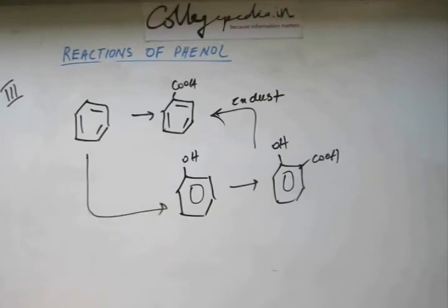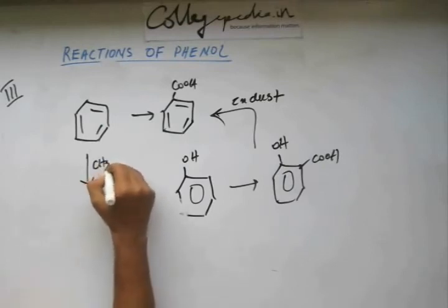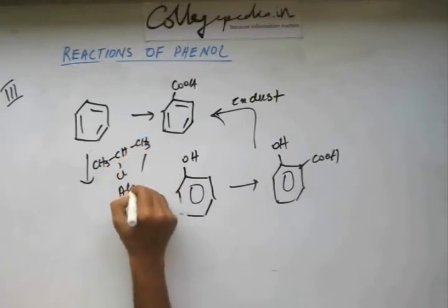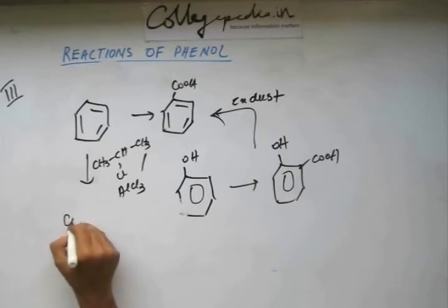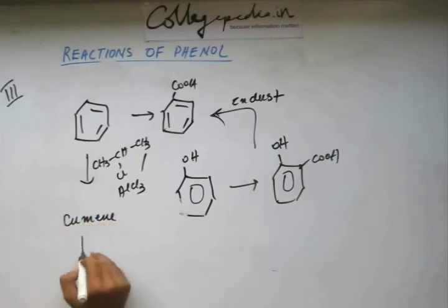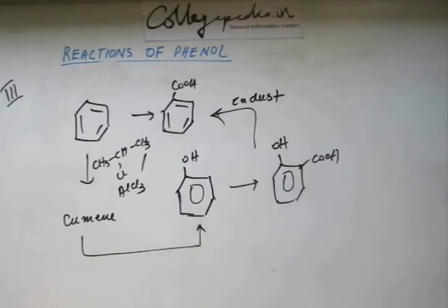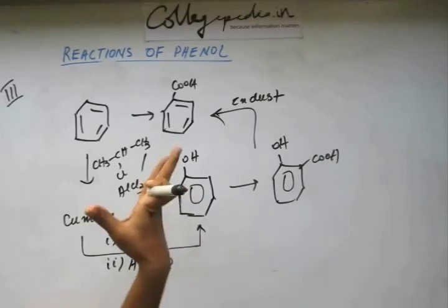And this is a standard method of preparation of phenol from benzene. You first prepare cumene out of benzene. You prepare cumene. From cumene, how to prepare phenol. This is a standard method and you must be knowing this. You add first oxygen and then you hydrolyze it. You will get phenol. From phenol, Kolbe's reaction. Salicylic acid. From salicylic acid, benzoic acid.